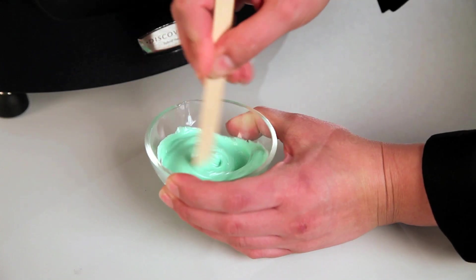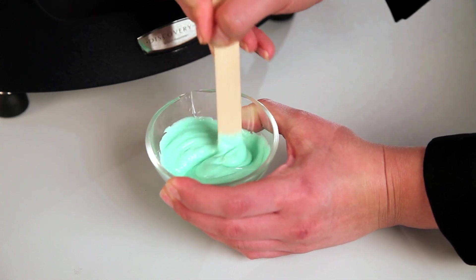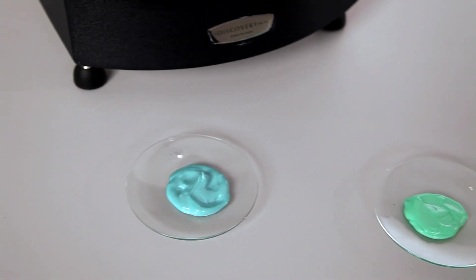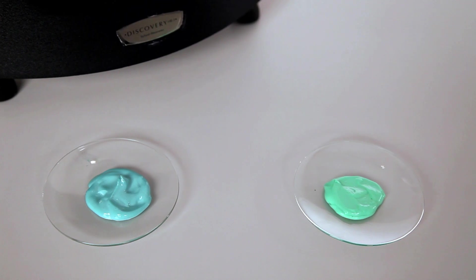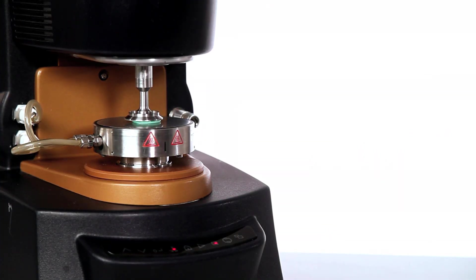Many shear thinning materials are also thixotropic, meaning their viscosity decreases over time at a constant shear rate. At rest, thixotropic materials will rebuild their structure, a characteristic that is necessary for many applications in coatings, personal care, and foods.